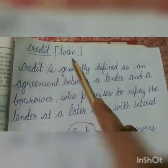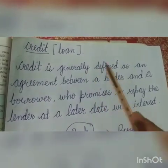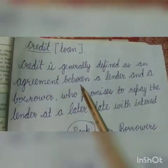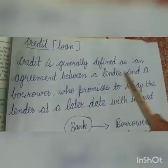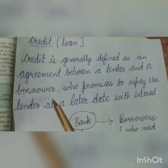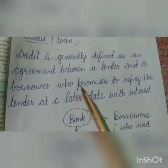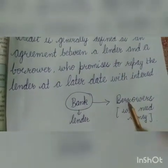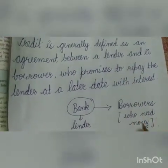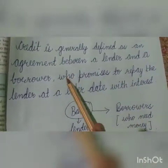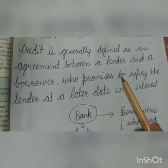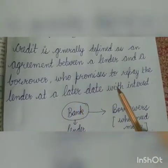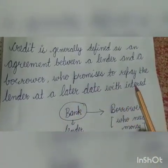Credit loan kya hai? Ye generally ek agreement hota hai between a lender and a borrower. Lender kya ho gaya? Bank. Aur borrower kya ho gaya? Who need money, who promises to repay the lender at a later date with interest.